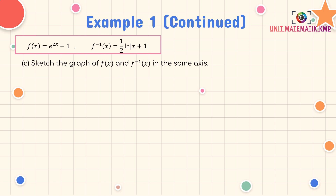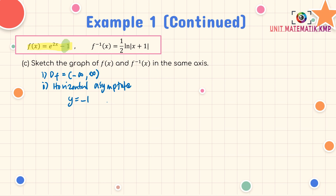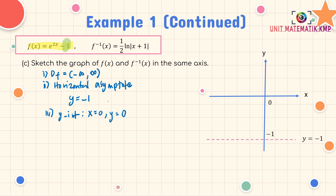Part C: sketch the graph of f(x) and f⁻¹(x) on the same axis. For the graph of f(x), the domain is negative infinity to infinity. The horizontal asymptote is at y = −1. The y-intercept: when x = 0, y = 0. Plot the point and horizontal asymptote, then draw the curve. This is the graph of f(x), an exponential function.